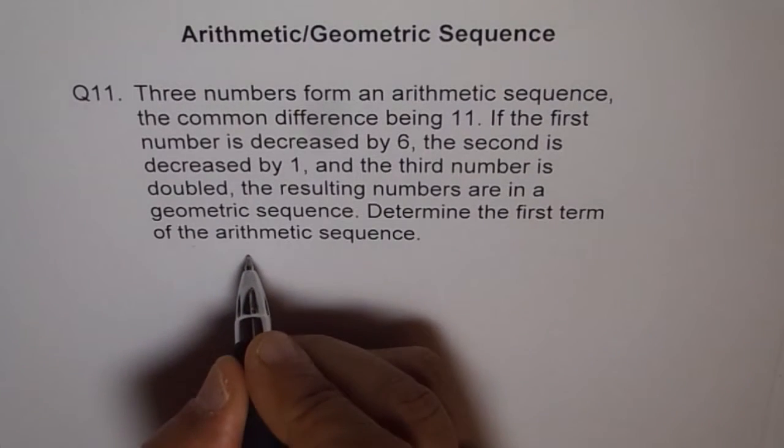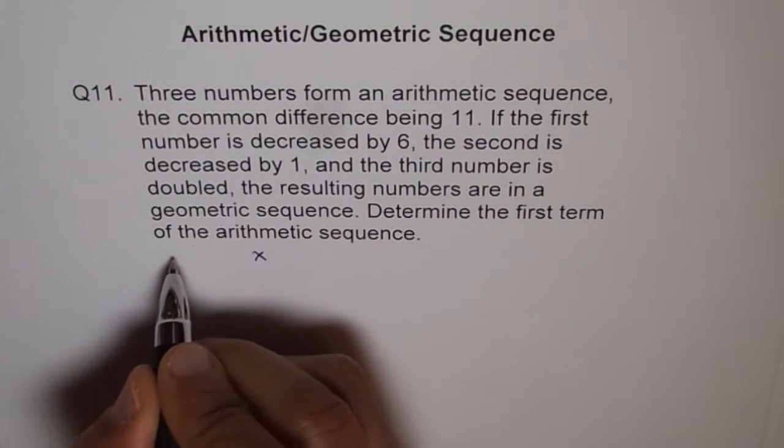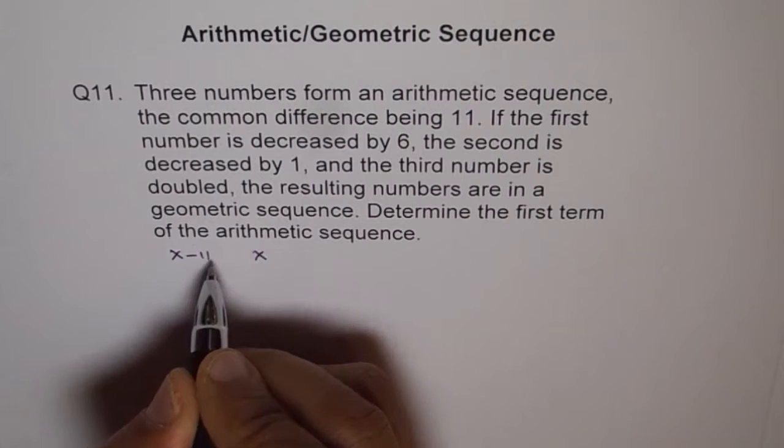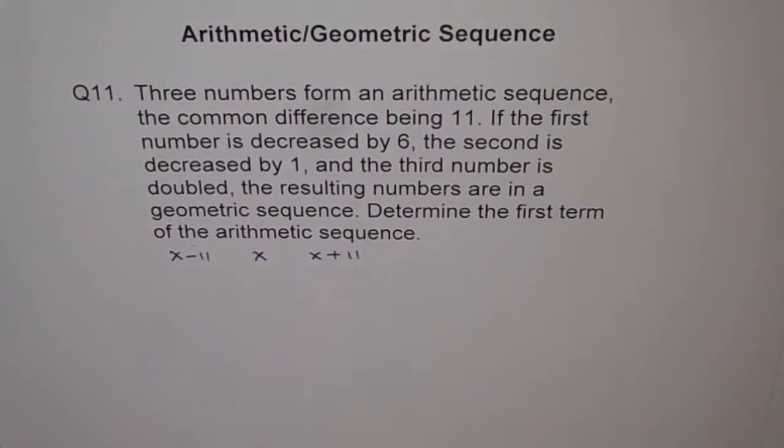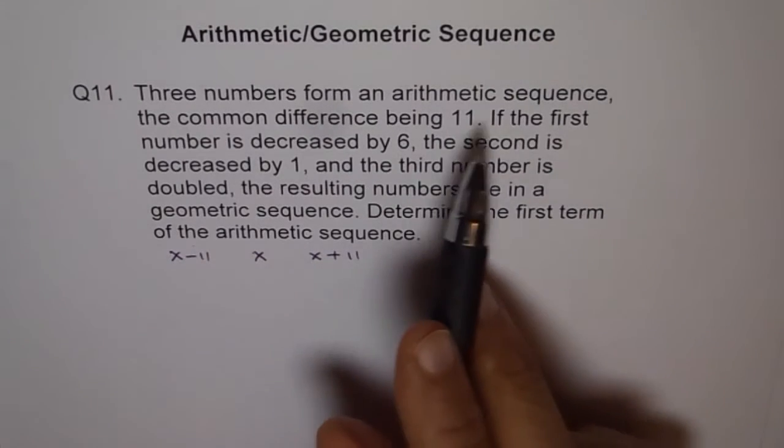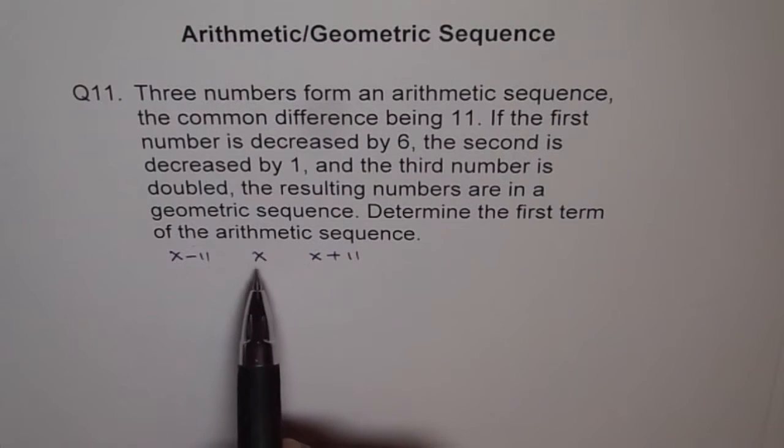So what we can do is let the numbers be x, and then it could be x minus 11 and x plus 11. Do you see, we could take these three numbers which are in arithmetic sequence where the difference is 11, correct?